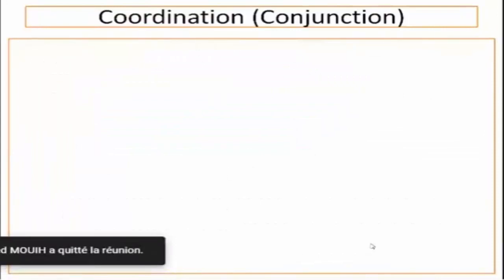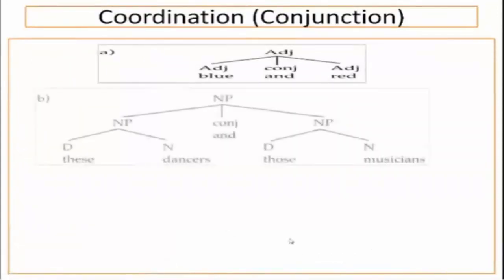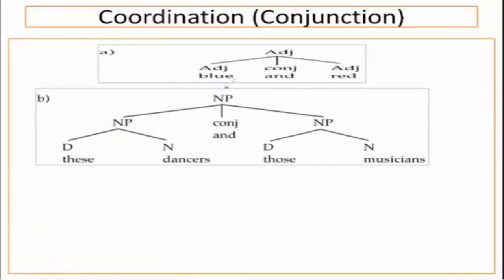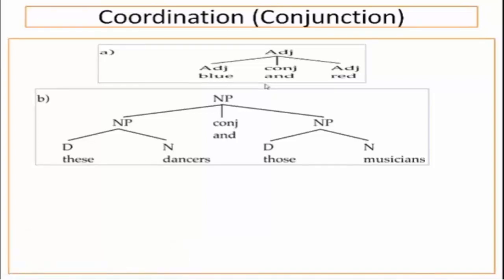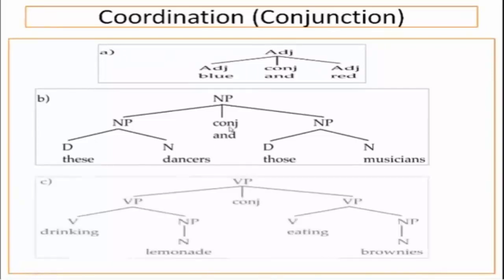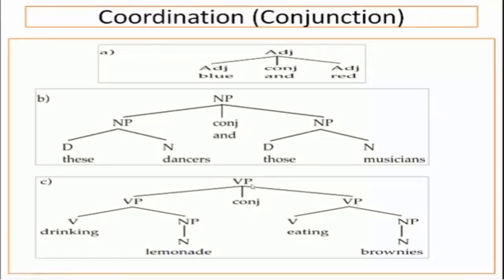X applies only when you have words. For example, 'blue and red' — conjunction between lexical categories. Or 'he speaks and writes': verb → verb conjunction verb. But if you have verb phrases, adjective phrases, or noun phrases, then you follow rule B. For example, 'drinking lemonade and eating brownies': VP → VP conjunction VP. Then within each VP, we have the verb and noun phrase.